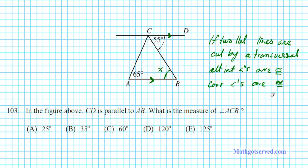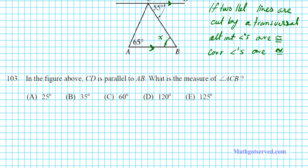So since angle DCB is congruent to angle ABC as alternate interior angles, we know that this angle x is going to be 55 degrees. Let's go ahead and write that down: angle x is 55 degrees.